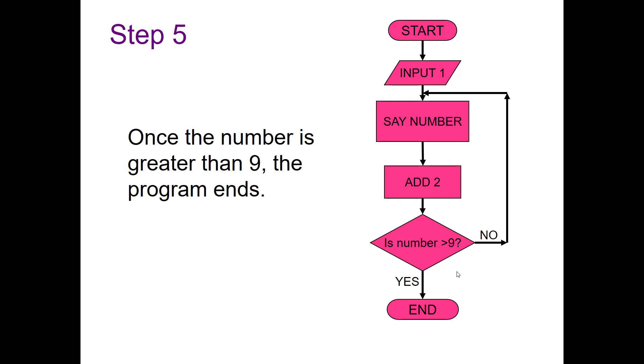So starting it out and going from the beginning: we're going to start, input one, say the number, we have one, add two. That's going to give us three. Is three greater than nine? No. So go back up, say the number again: three, add two, that gives five. Is five greater than nine? No. And we'll keep looping in this circle.